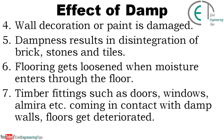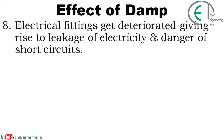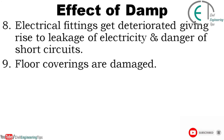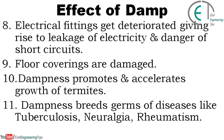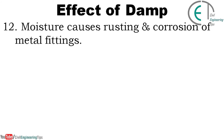Timber fittings such as doors, windows, and almirahs coming in contact with moisture get deteriorated. Electrical fittings also get deteriorated, giving rise to leakage of electricity and danger of short circuits. Floor coverings are damaged. Dampness promotes and accelerates growth of termites. Dampness breeds germs of diseases like tuberculosis, neuralgia, and rheumatism. Moisture also causes rusting and corrosion of metal fittings.